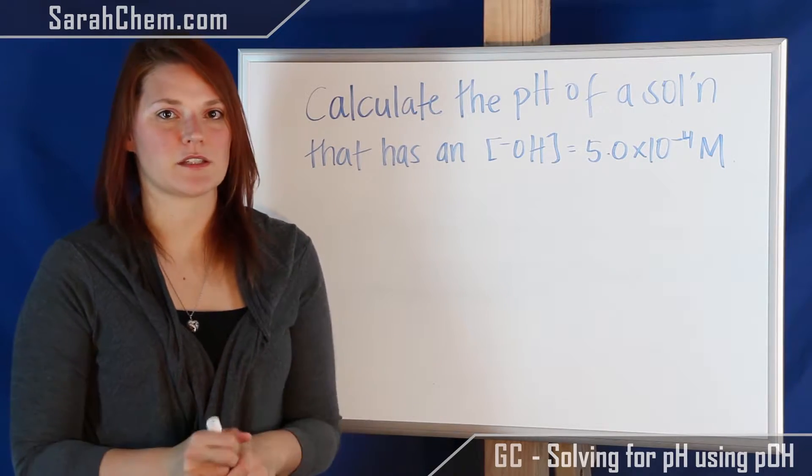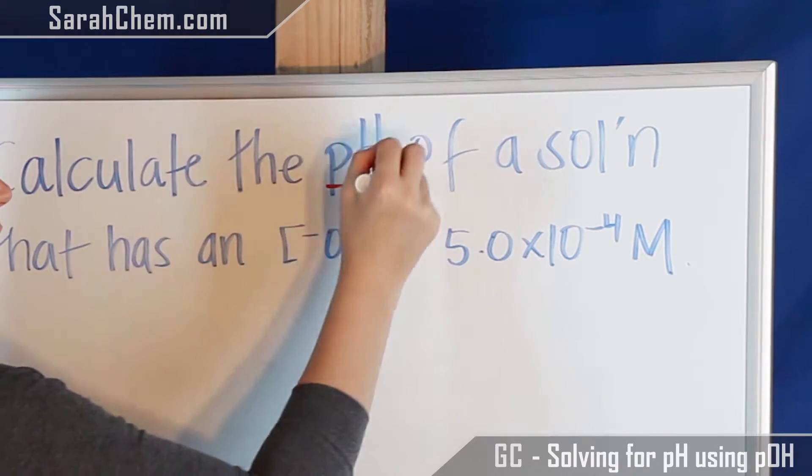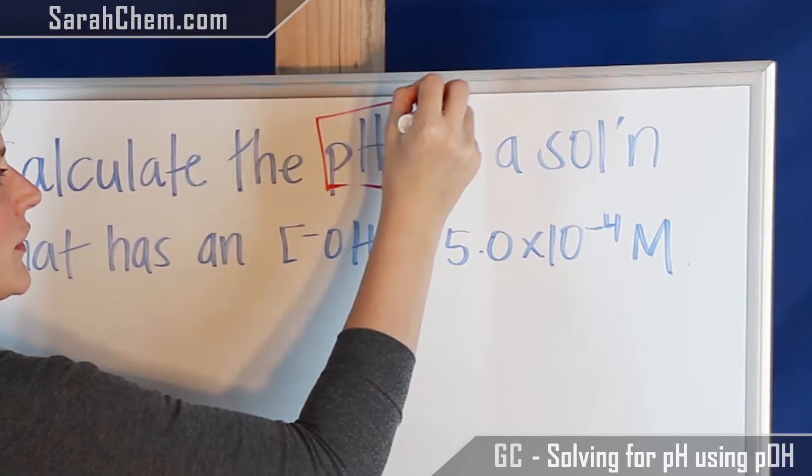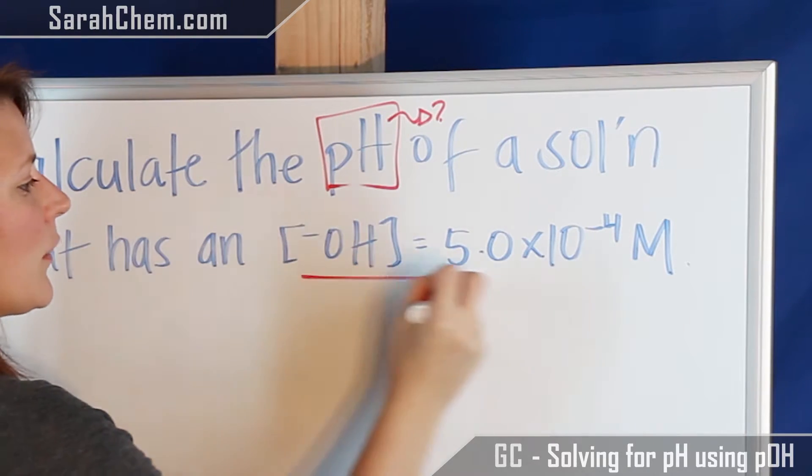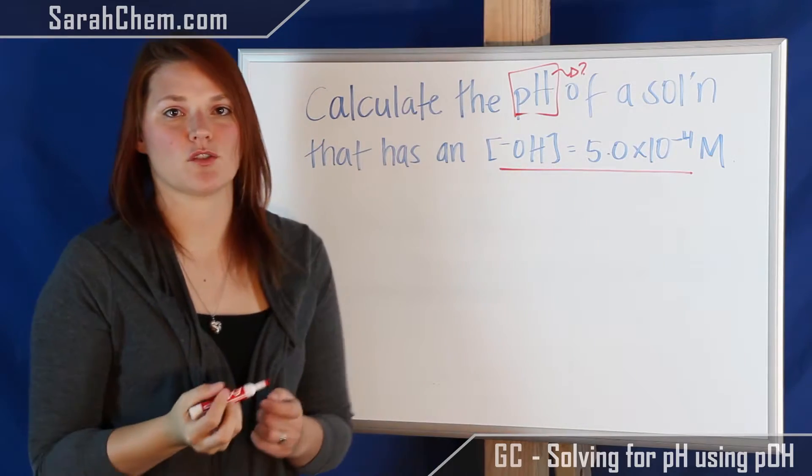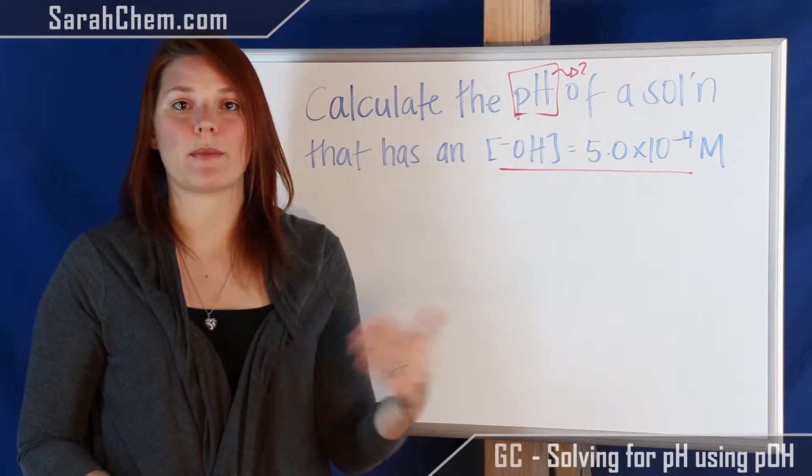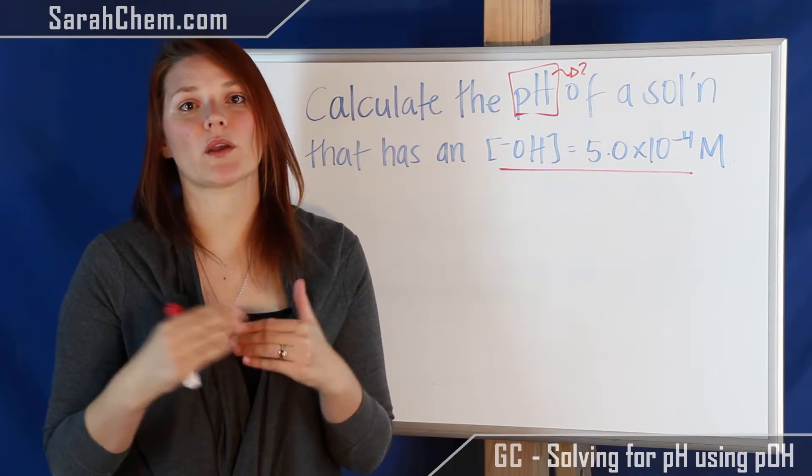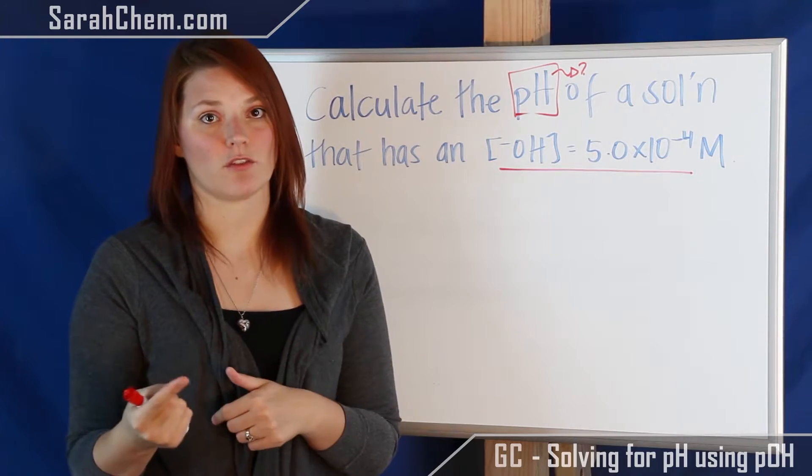So let's first pull out the relevant pieces of information. We know that we are looking for the pH of the solution. We also see that we are given the hydroxide concentration. Now there is more than one way to go about this, but for this video we are going to look at how we can use the pOH to solve for pH.